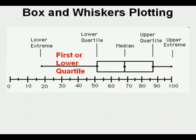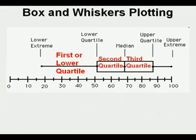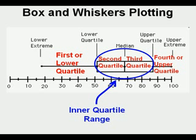The first or lower quartile is the left whisker, representing the lowest quarter or lowest 25% of the data. The left half of the box represents the next 25% of the data and is called the second quartile. The right half of the box represents the next 25% and is called the third quartile. The right whisker represents the highest or fourth quartile. The box itself, or the second and third quartile together, is called the inner quartile range.